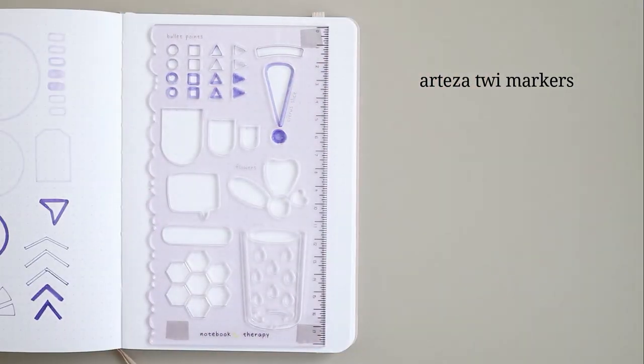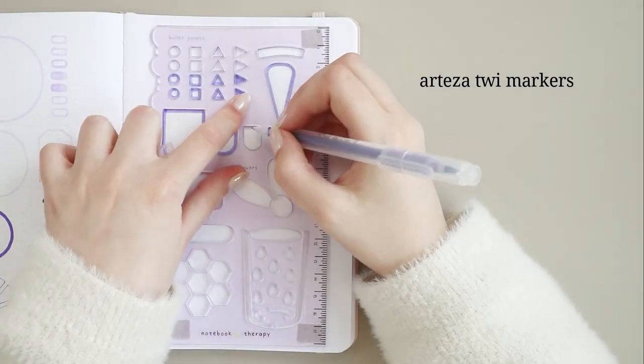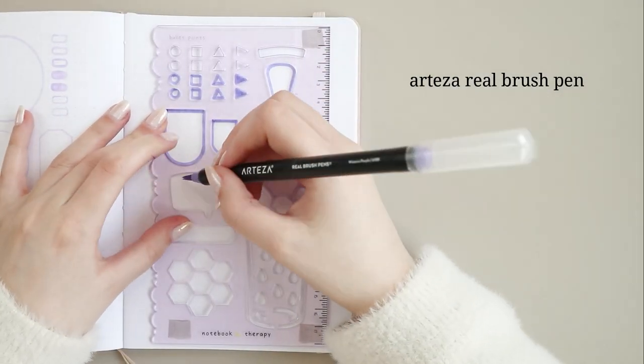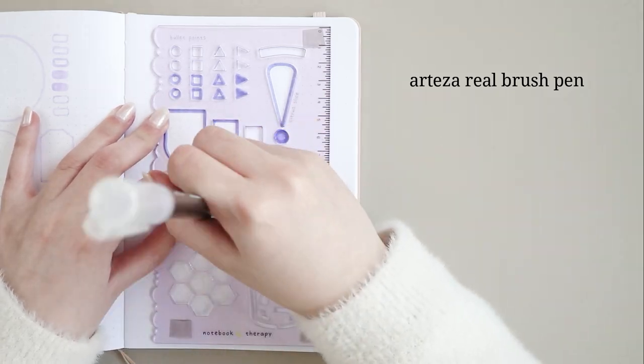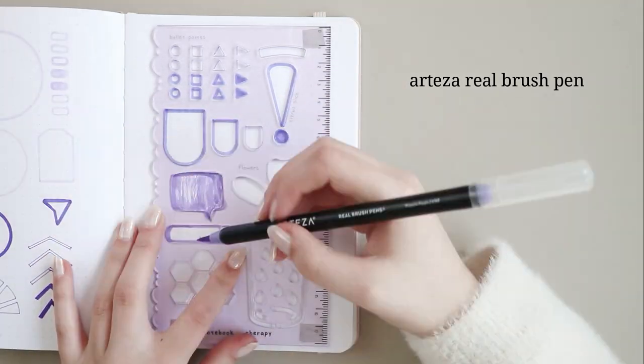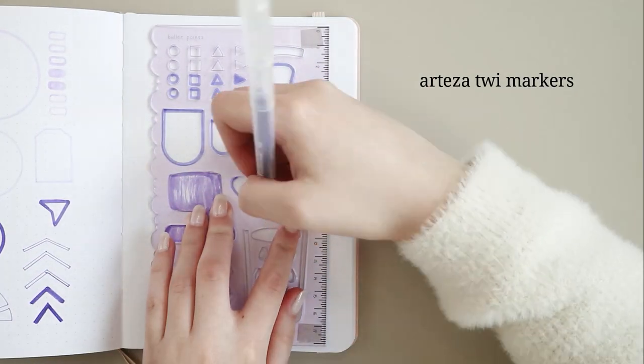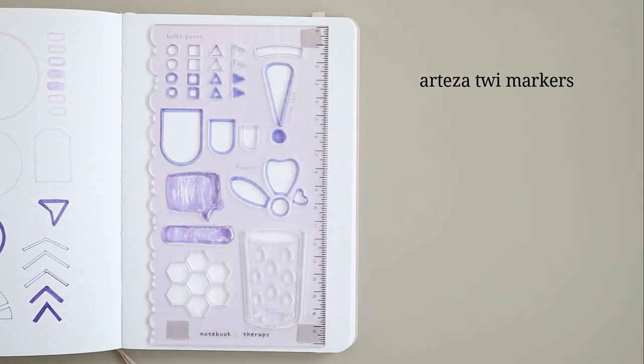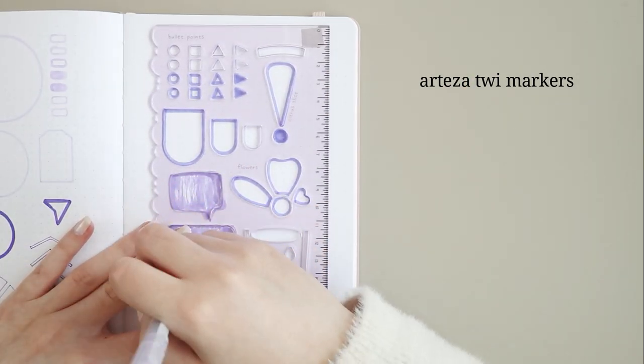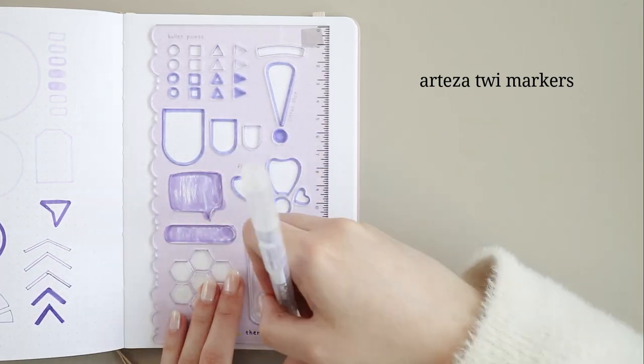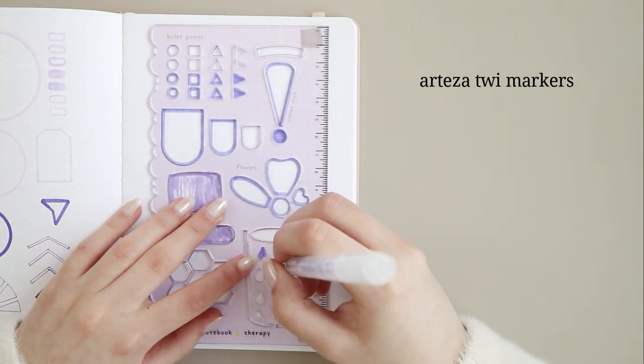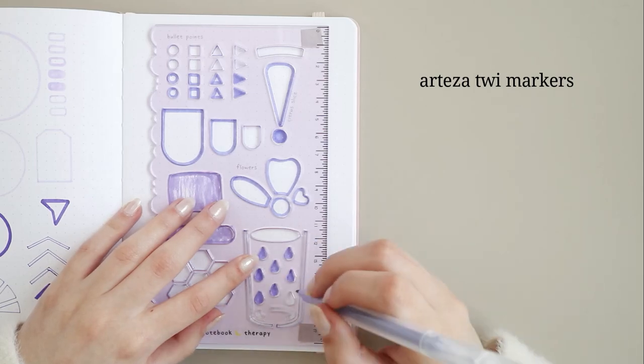Markers like the Tombow brush pens or the Ohuhu markers work well with the stencils but I would still do the shapes with a pencil first just to be safe. Also if you plan to fill in the shape of the stencil instead of just doing the outline, I recommend coloring the shape with the stencil on the notebook. If you just want the outline, maybe do it with pencil first.